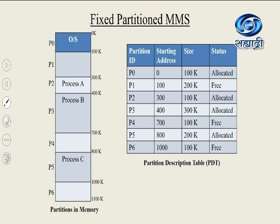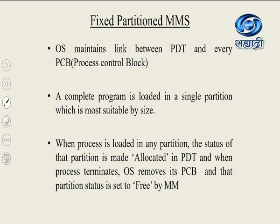The partition description table contains all details: partition ID, starting address, size and status. The operating system is loaded in partition P0 — starting address 0, size 100K, status allocated. OS maintains a link between the PDT and every PCB — that is, process control block. The process control block is created whenever a process is created and contains all information related to that particular process. A complete program is loaded in a single partition most suitable by size. When a process is loaded, the status of that partition is made allocated in the PDT, and when the process terminates, OS removes its PCB and the partition status is set to free.